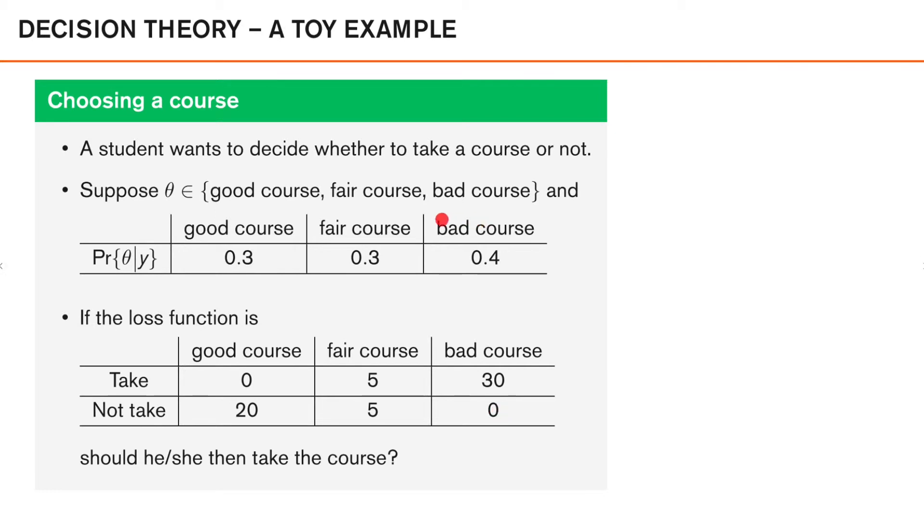The question is then, according to this posterior distribution regarding the quality of the course and this loss function here, should he or she then take the course or not? From an optimal decision theoretic point of view, the student should make the decision that has the lowest expected posterior loss. So the student should decide to take the course if the expected loss of taking the course is less than the expected loss of not taking the course and vice versa.